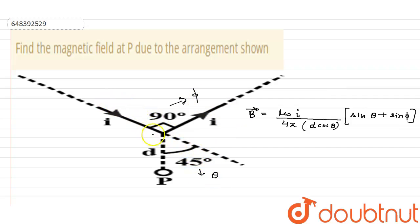Now, regarding the distance components: if the perpendicular distance is d, then the projections become d·sinθ and d·cosθ respectively — this is a standard and important geometric relationship used in this type of problem.